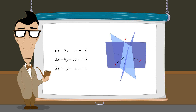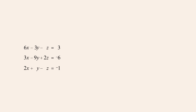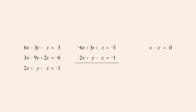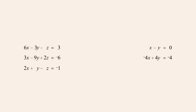Now let's see what happens when we try to solve this system of equations. Since the first and second equations are the same as in the last two examples, using these equations to eliminate z produces the same equation in x and y as before. Now using the first and third equations to produce another equation in x and y, we multiply the first equation by negative one before adding so that we can eliminate z. Adding the equations gives us negative four x plus four y equals negative four, or dividing both sides by four, negative x plus y equals negative one.